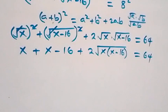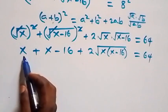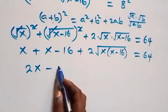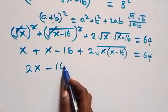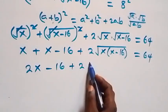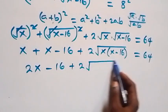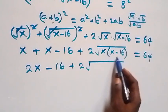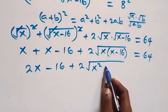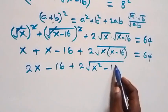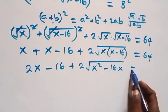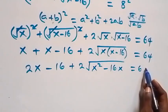That is, x + x gives us 2x, minus 16, plus 2 times √(x² - 16x) equals 64. Opening the bracket inside the root, we have x² minus 16x.